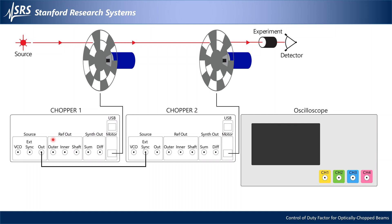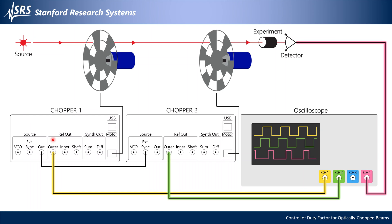Recall the experimental setup from last time. I've connected the outer slots reference output of chopper 1 to channel 1 of the oscilloscope and am triggering the scope on its rising edges. I'm monitoring the photodiode output on channel 4 of the oscilloscope.